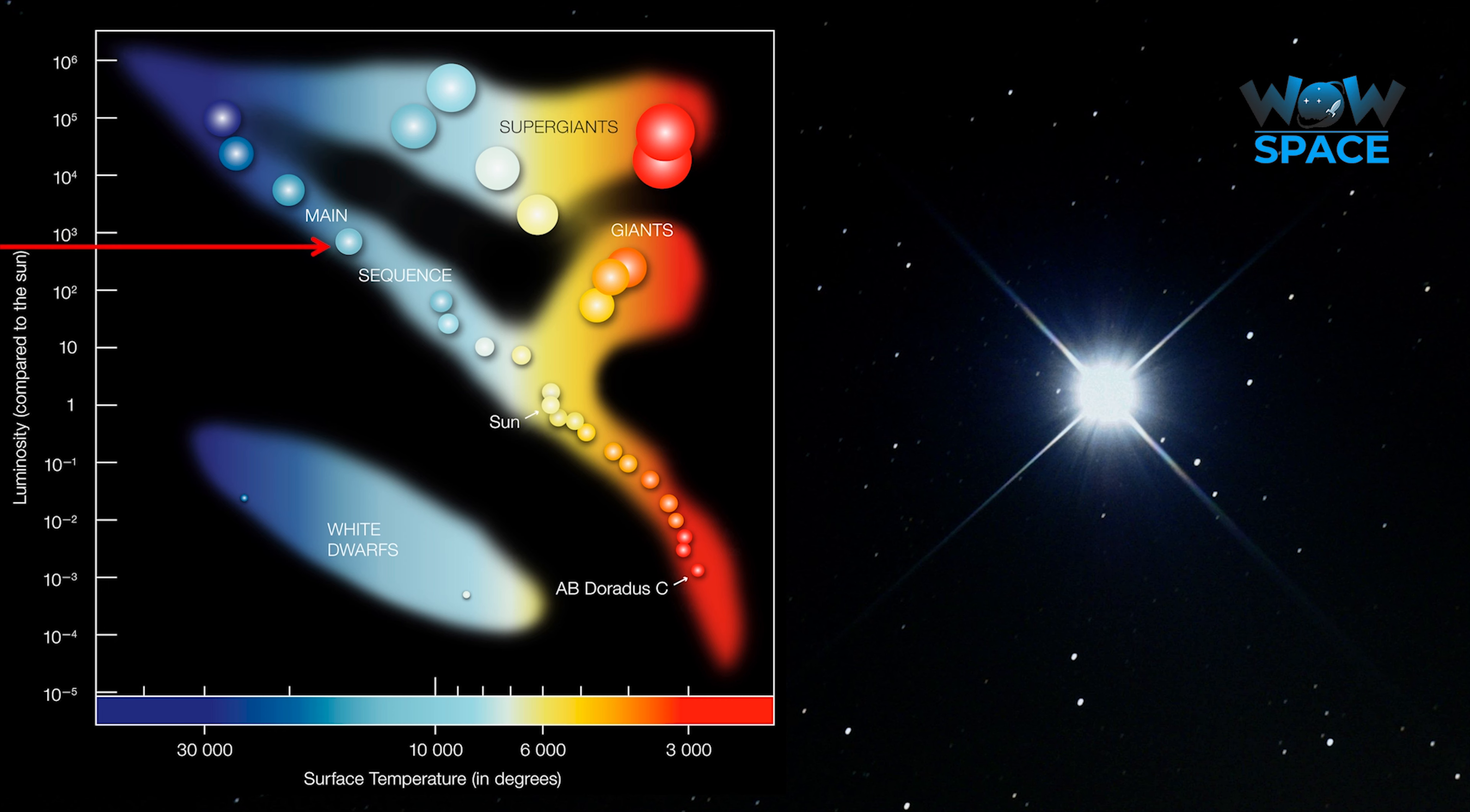Because these supernovae always happen to a white dwarf that hits a very narrow range of mass, the rise and fall of their brightness is very predictable. And given they are very bright events, they have been used to measure distances of up to 13.2 billion light years.